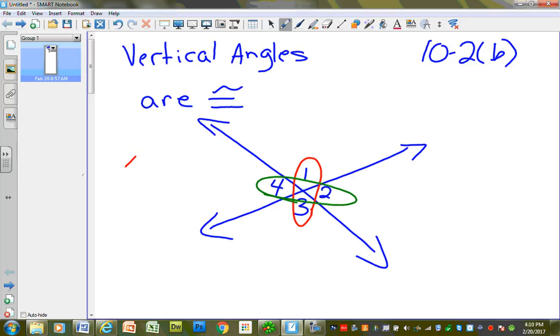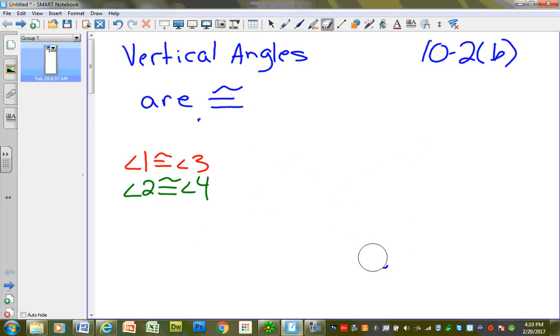So over here I want you to write Angle 1 is congruent to Angle 3. And I also want you to write Angle 2 is congruent to Angle 4. So I'm going to erase this here quick. And if I do that, I'm going to redraw this again.